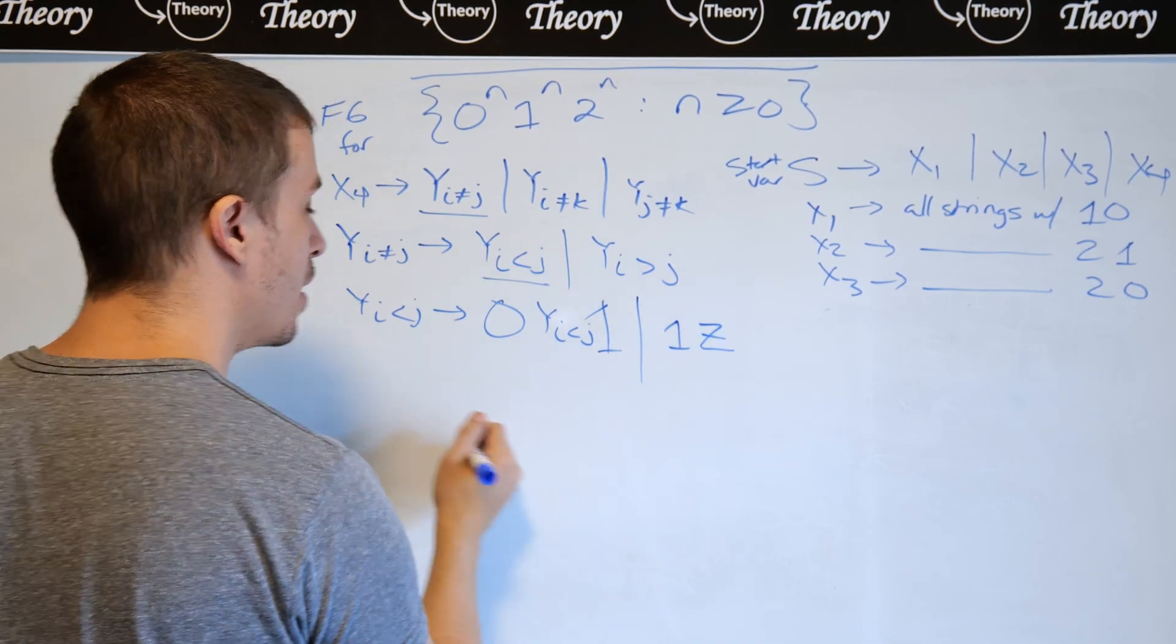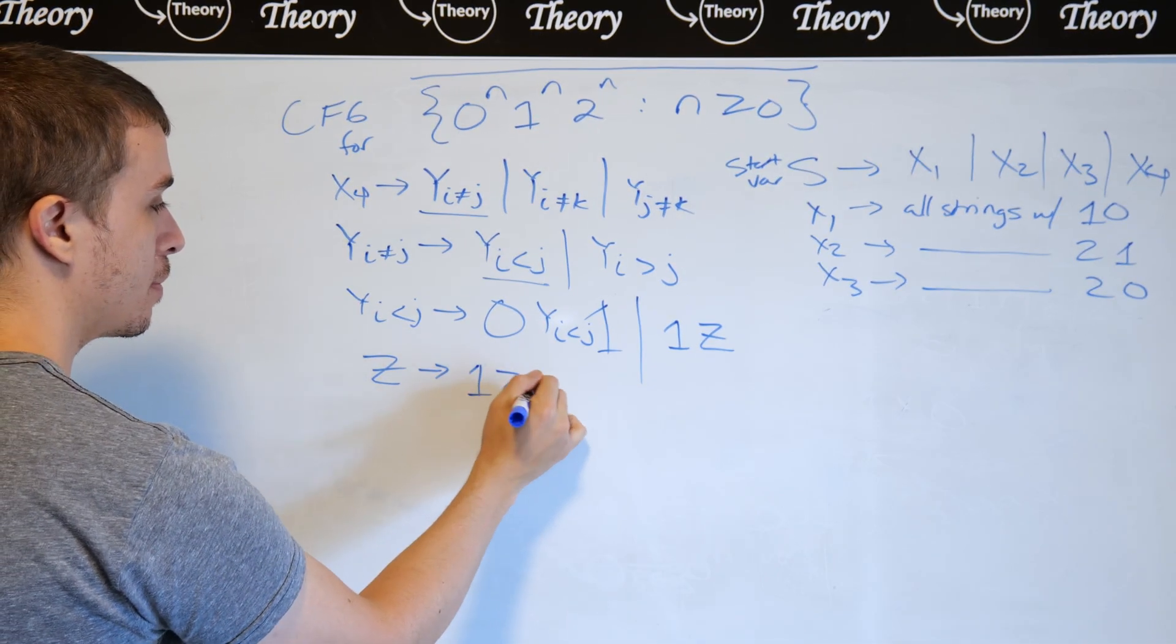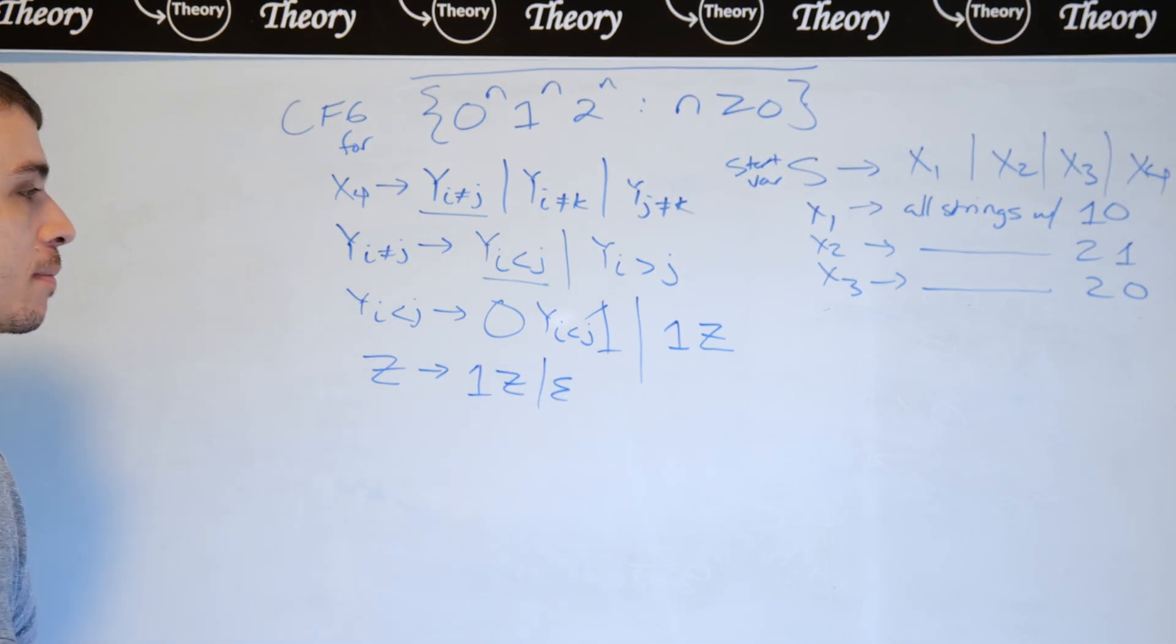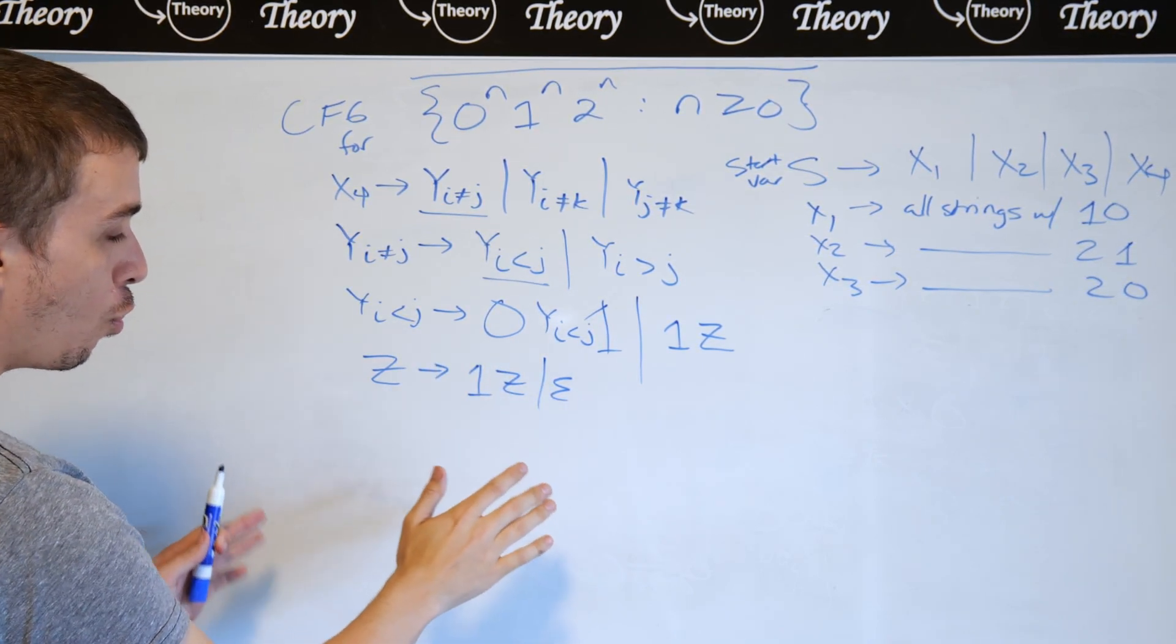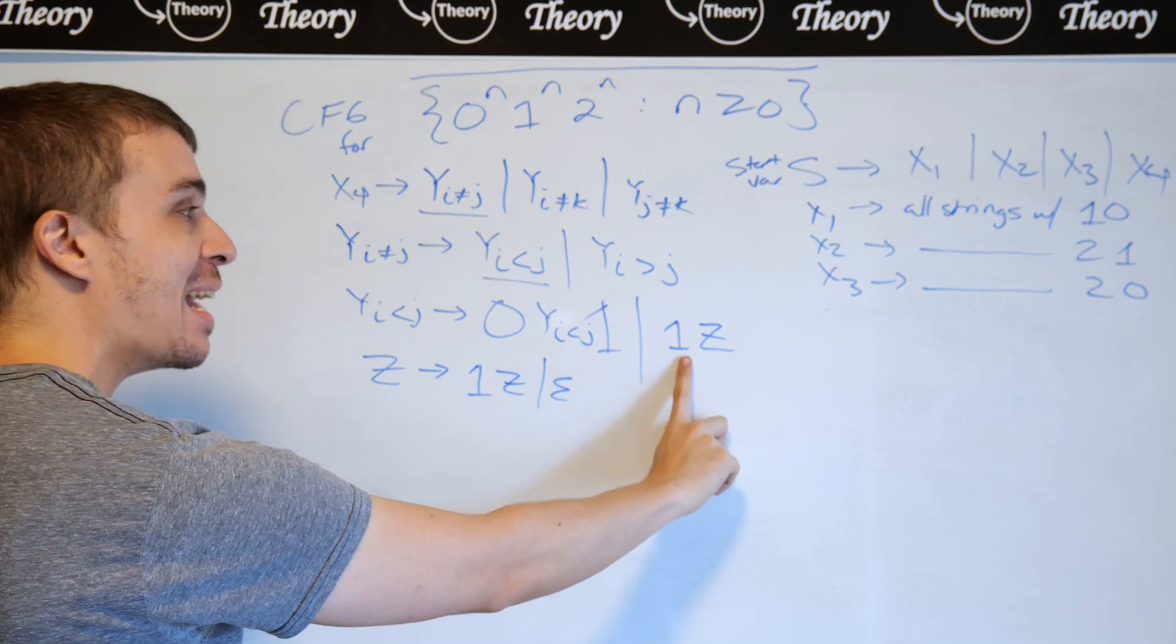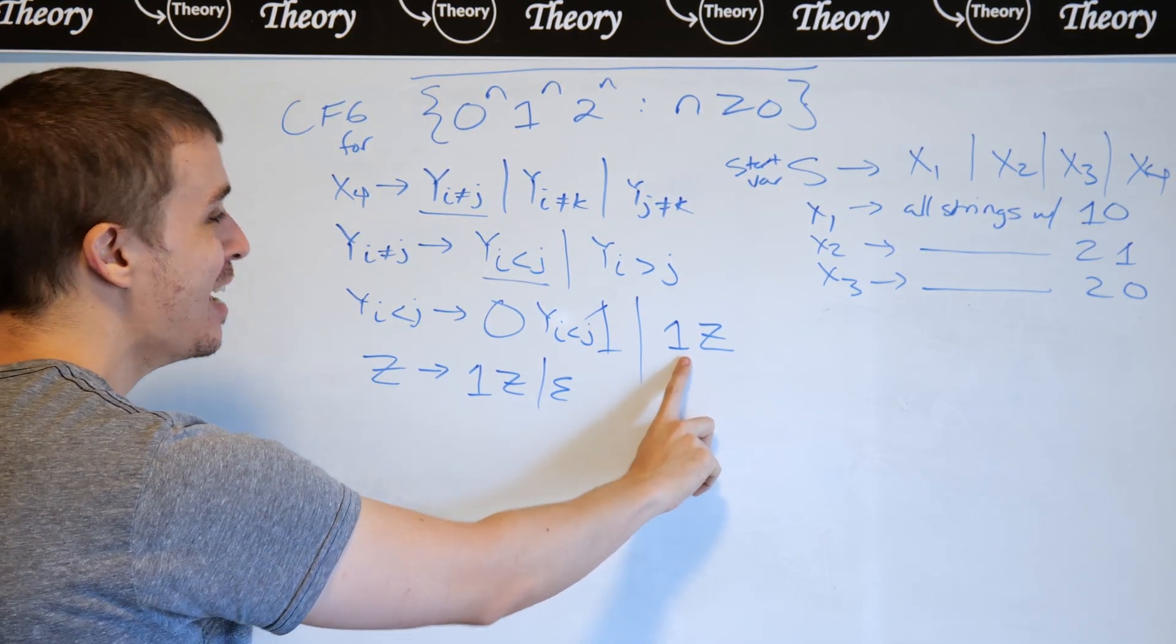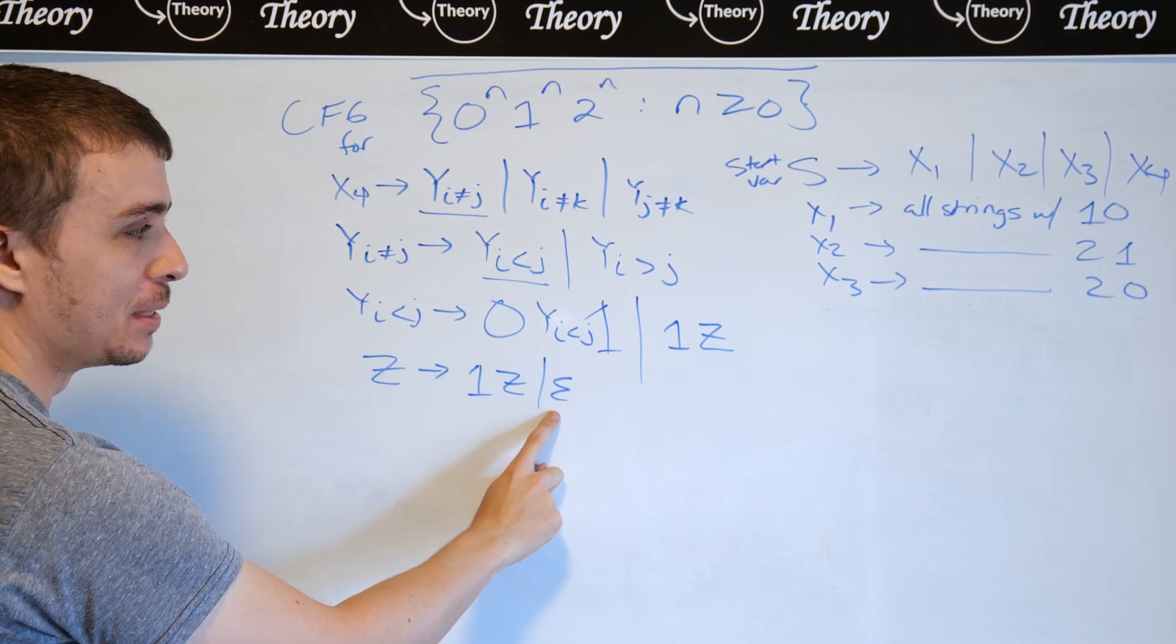So z is going to make at least zero more ones, like this. So here, what I have is that z makes at least zero ones, and then y i less than j must make at least one one before it can actually make a string of terminals, because the empty string is down here.